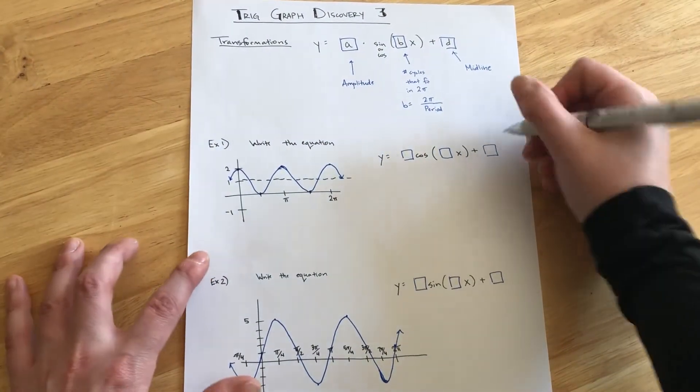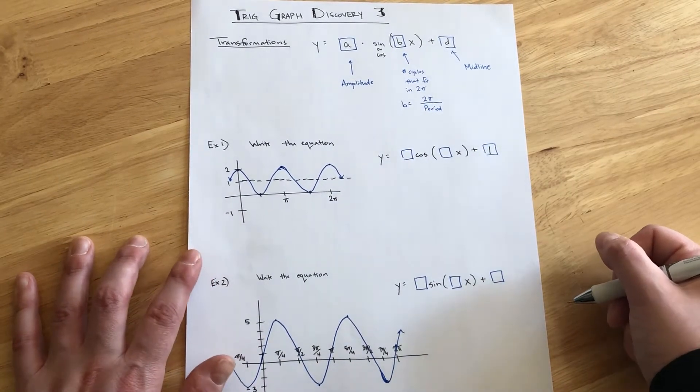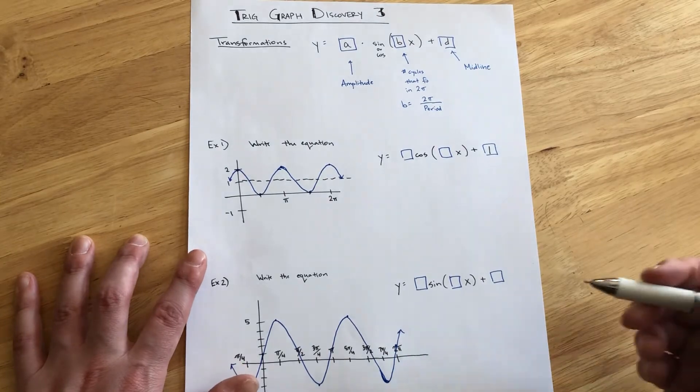That means that our D parameter is plus 1 on the end. That's what we would fill in the blank. From there, we would want to identify the amplitude.